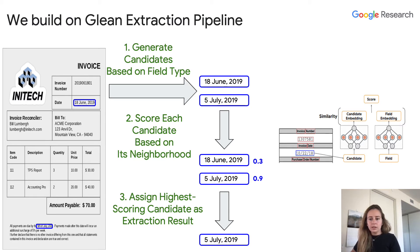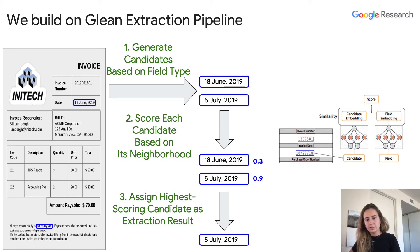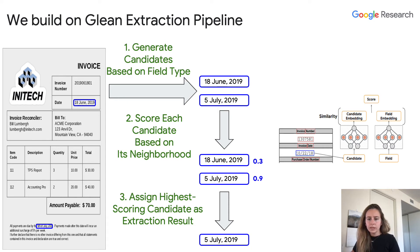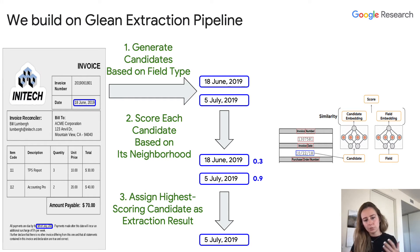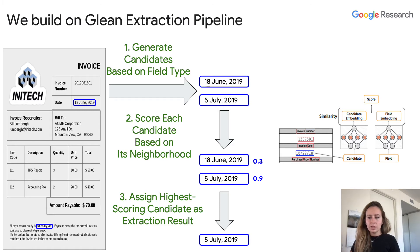GLEAN's design decision of leveraging these candidate generators — built using an existing library of entity detectors used in Google's knowledge graph, available through a cloud API — significantly narrows down the search problem for its ML-based score model. This way, GLEAN's ML-based score model can fully focus on learning a representation for an extraction candidate that captures its spatial neighborhood on the page, as well as learning the semantics of the target field.